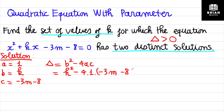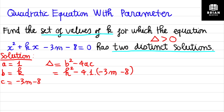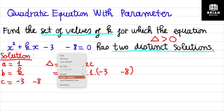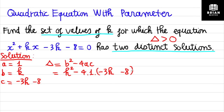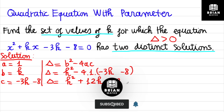Substituting, you get k² − 4 × 1 × (−3k − 8). Expanding the bracket gives k² + 12k + 32. This is the expression for the discriminant, and we need it to be greater than zero.